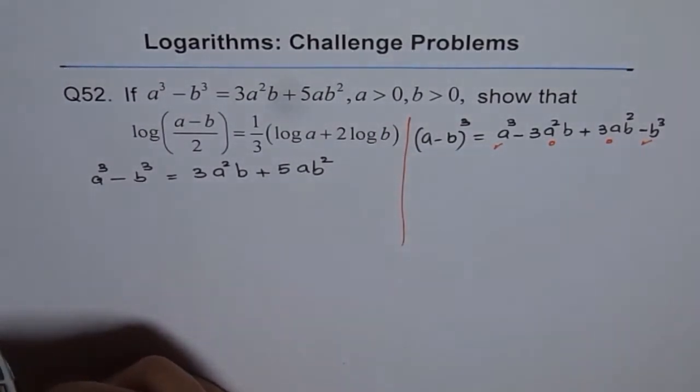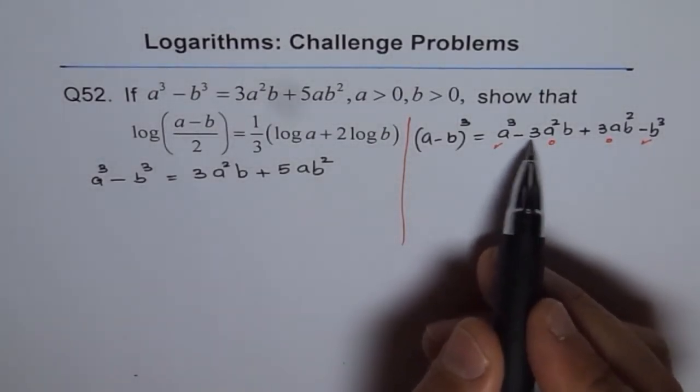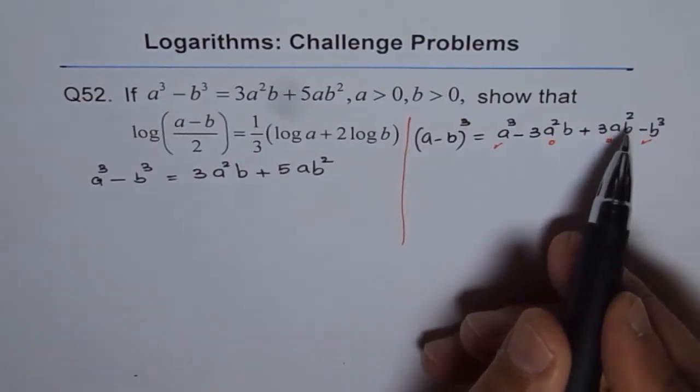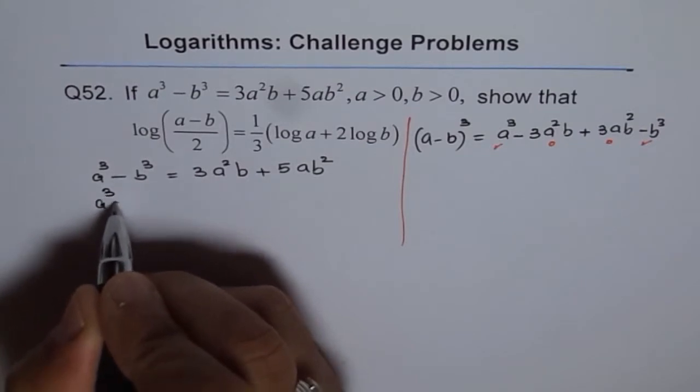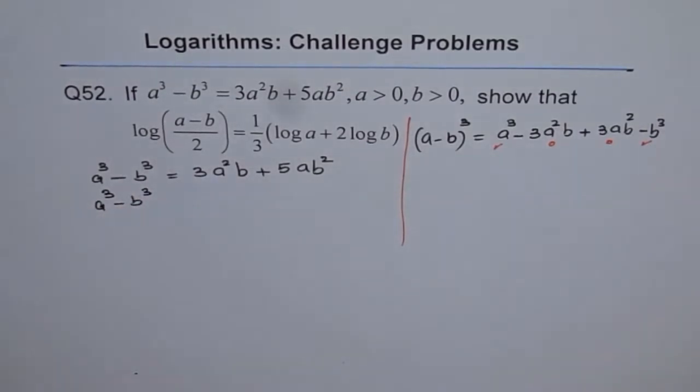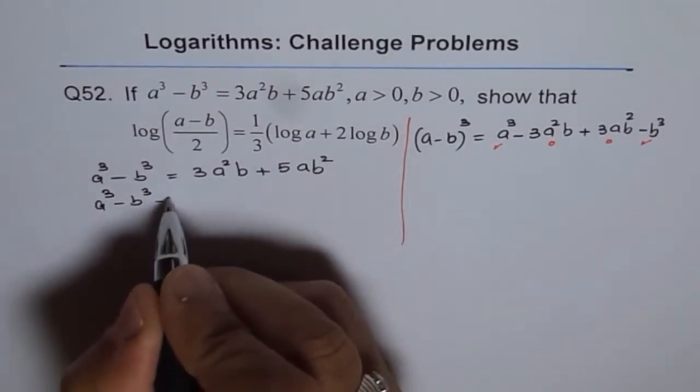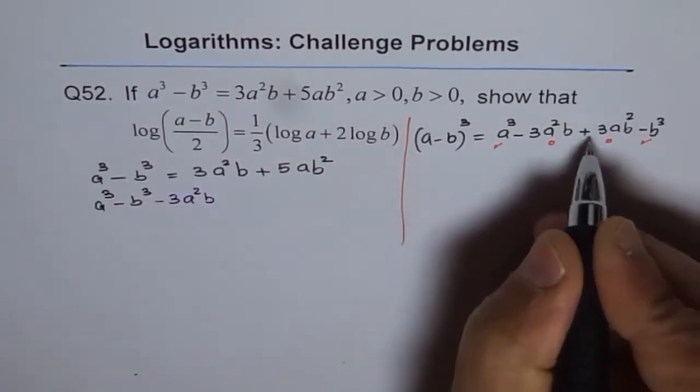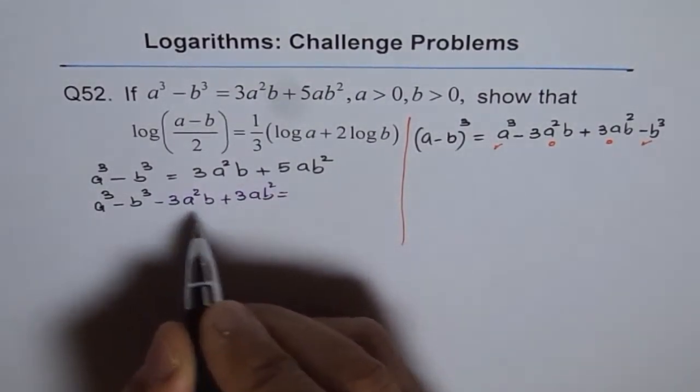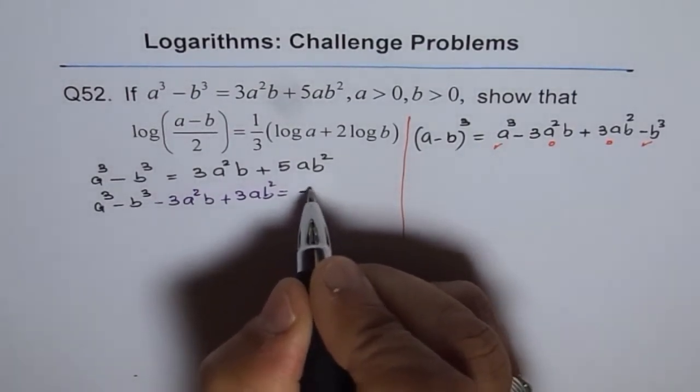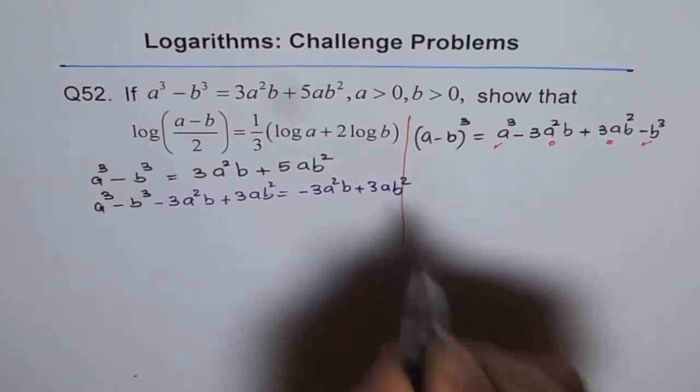So, that is the strategy which I'm going to work with. What I'm doing is I'm adding minus 3a square b and plus 3ab square on both the sides. So, that will result into a minus b whole cube. I'm adding here and I'm also adding on this side, which is minus 3a square b plus 3ab square.